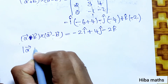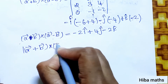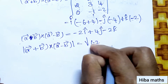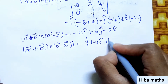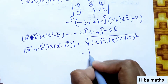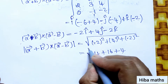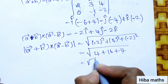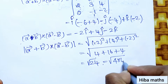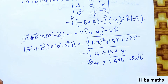Now finding the magnitude: square root of (-2)² + 4² + (-2)² equals square root of 4+16+4 equals square root of 24. Simplifying, root of 24 equals root of 4×6 equals 2 root 6.